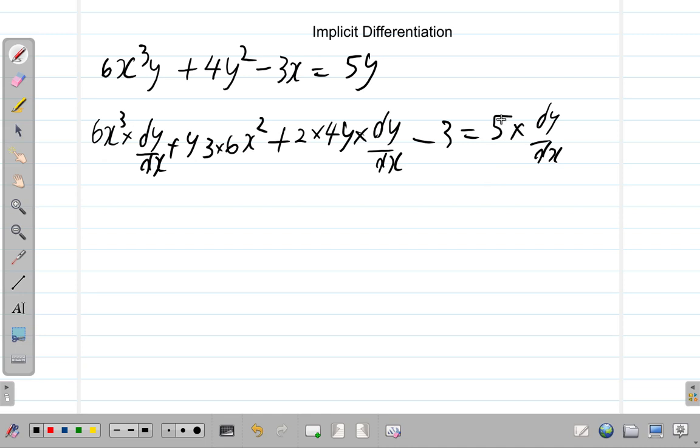Alright. Now, here, what we have is dy by dx times 6x cubed. Alright. Let's keep it dy by dx to the right. I just want to simplify everything. So, it's 6x cubed dy by dx plus 3, 6, 18x squared y plus 2 fourths, 8y dy by dx minus 3 equals 5dy by dx.